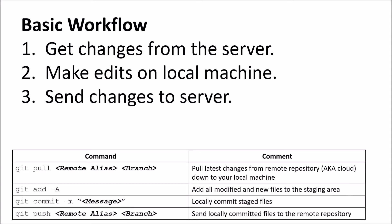Here are the commands associated with those main steps. The first one is git pull, which is going to allow us to get changes from the remote repository — the cloud — and pull those down to your local machine. The next two, git add and git commit, are what you'll be doing after you've made changes to your local machine. Git add is going to allow you to take those changed files and move them to what Git calls a staging area.